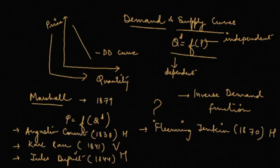In fact, Marshall was not the first one to give the demand curve. There were several economists like Augustin Cournot who had plotted the demand curve in 1838, Karl Rau in 1841, Jules Dupuit in 1844, and Fleming Jenkin in 1870. All of these economists had put prices on different axes. For example, Cournot, Dupuit, and Jenkin had placed prices on the horizontal axis, whereas Karl Rau had placed prices on the vertical axis.